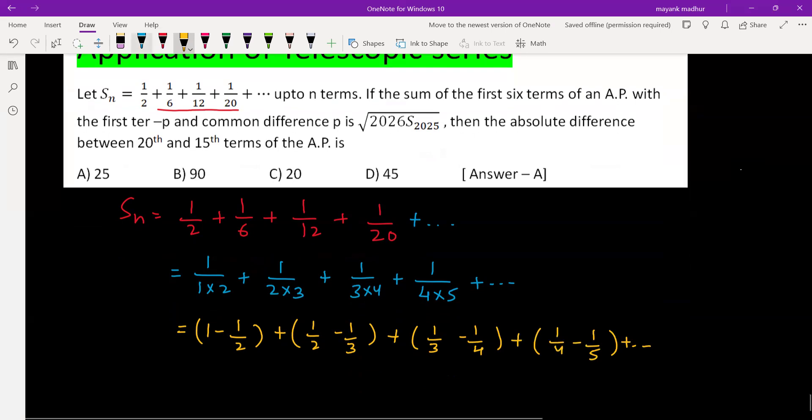We have to go till n term. So nth term will be 1/n minus 1/(n+1). We will be getting the first term and the last term, which is 1 from the beginning, because the remaining all the terms will cancel out. So we will have 1 minus 1/(n+1), which is basically n/(n+1).